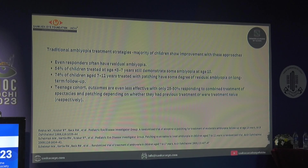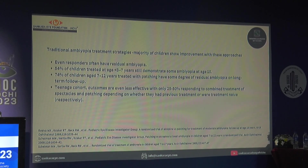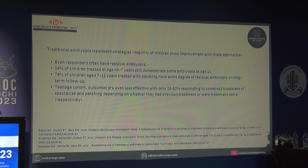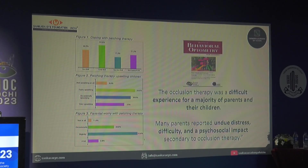However, even responders to occlusion therapy have residual amblyopia — 54 percent of children have some amount of amblyopia even if treated young, and most have poor long-term compliance. Outcomes are not great in older children. Occlusion is a very difficult experience not just for the child but also for the parents, who acknowledge both the difficulty and the psychosocial impact they undergo.